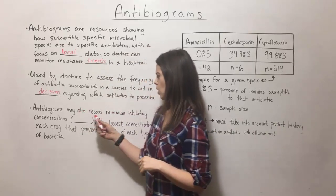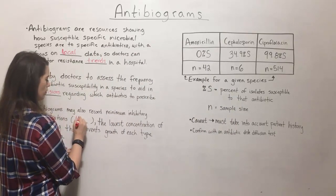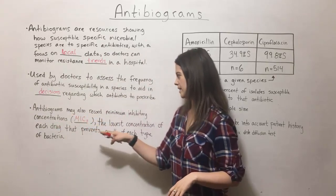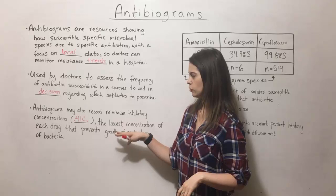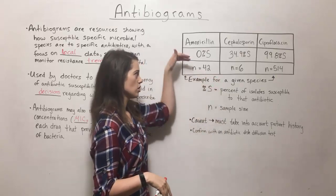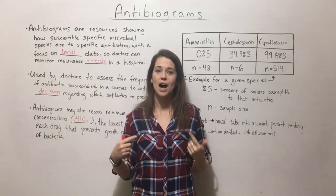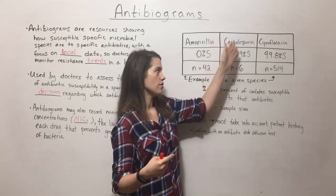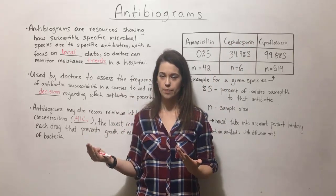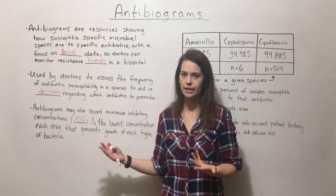Some antibiograms also record the minimum inhibitory concentrations, often referred to as the MIC. These are the lowest concentration of each drug that prevents growth of each type of bacteria. So in an antibiogram, in addition to the percent susceptible and the sample size, there might also be information on what concentration of these drugs was needed to fully inhibit the growth of that particular bacterium — helping the doctor know not just which antibiotic to prescribe, but at which dosage.